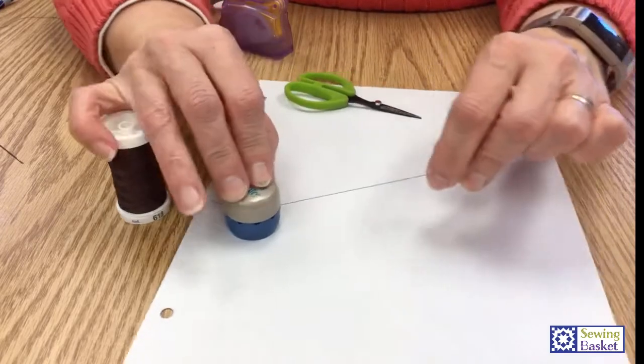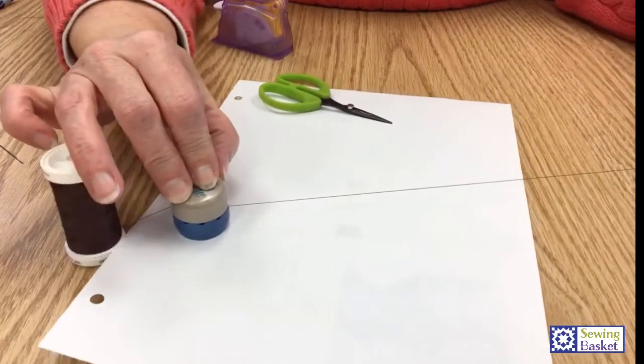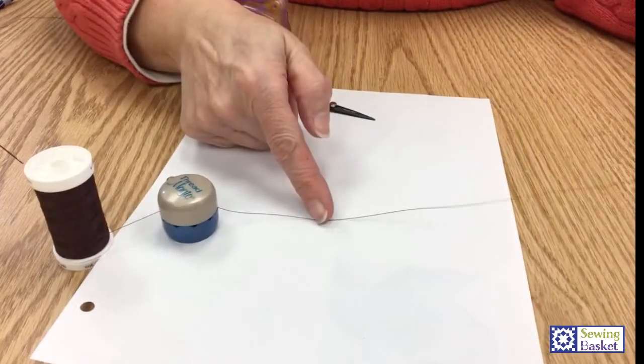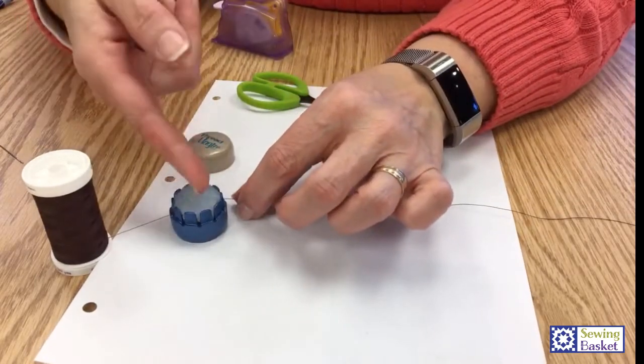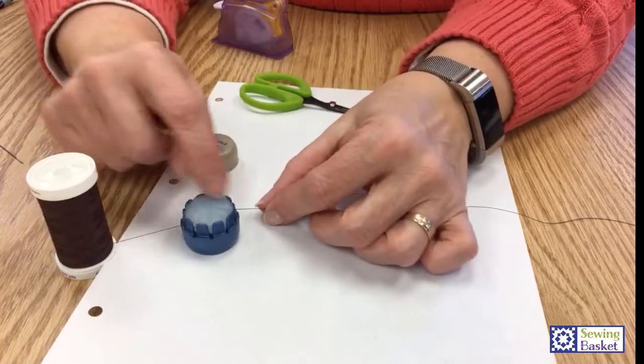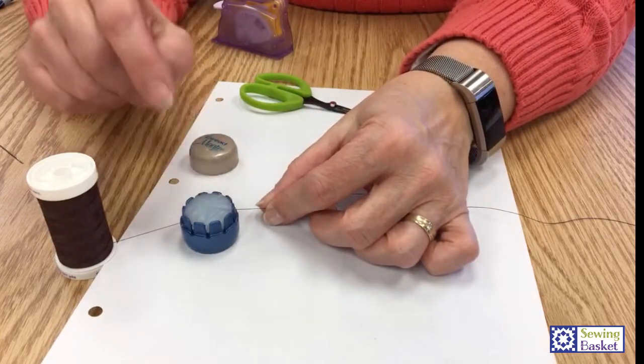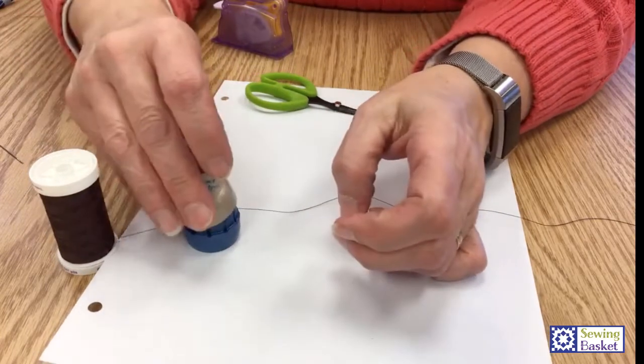So once I've used up this thread and I need another one, I'm going to come back, thread it, and then pull it right through there and cut it here. So you just always leave that little tail. Every once in a while I'll open this up and switch it to a different groove just so I don't get a cut—it kind of self-heals after a while.